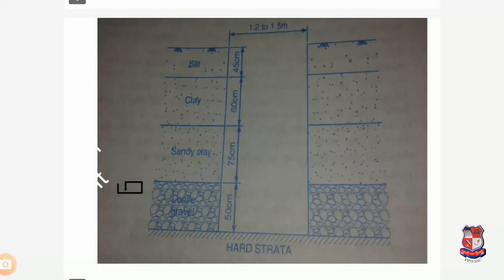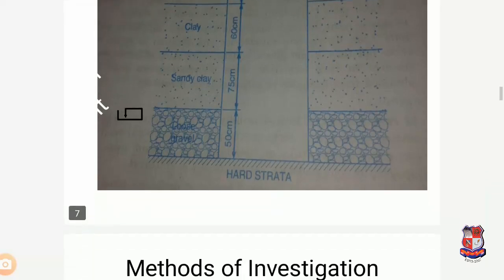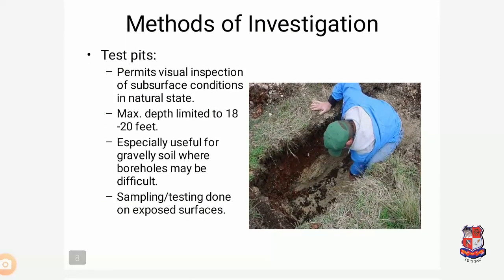In the picture of a trial pit, you can see that below the level there is loose gravel for 500 cm, above it is sandy clay, then clay, and above that is silt. We cannot directly judge the ground conditions without investigation. The width of the pit is 1.2 to 1.5 meters, and depths of 575, 60, and 40 centimeters were considered for investigation, revealing many variations in the soil. Test pits permit a visual inspection of subsurface conditions in their natural state. Maximum depth is 18 to 20 feet, and they are especially useful for gravelly soil where boreholes may not be possible. Sampling and testing are done on the exposed surface.